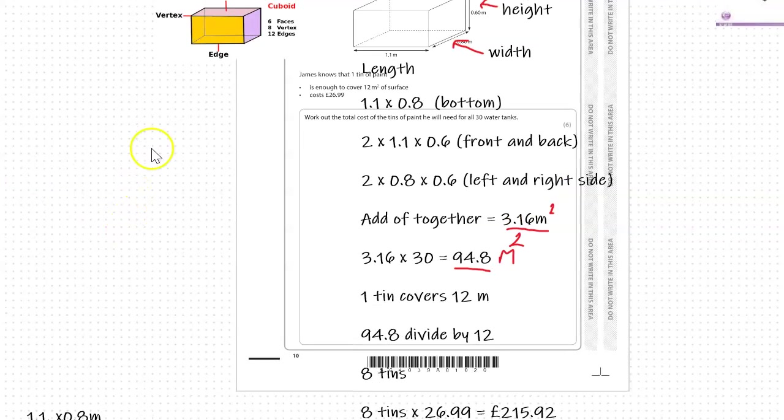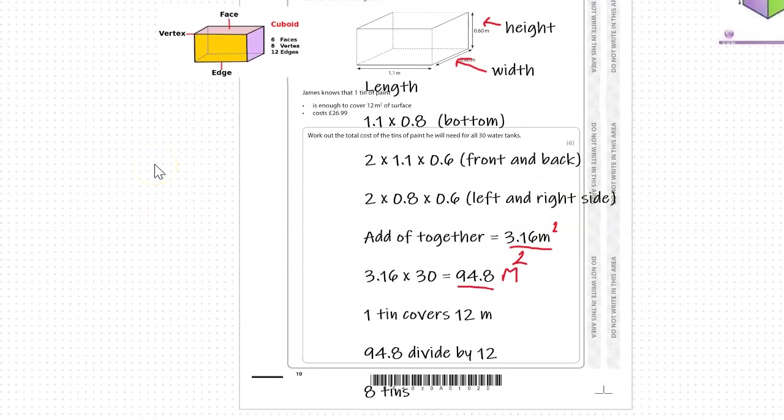The question then goes on: James knows that one tin of paint is enough to cover 12 meters squared of surface and costs £26.99. We've worked out the surface area. One tin covers 12 meters, so if we do 94.8 meters squared divided by 12, we should have how many tins.